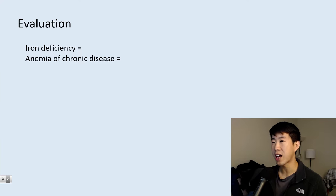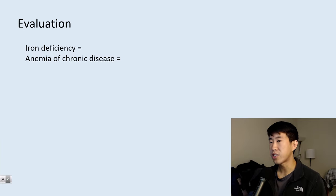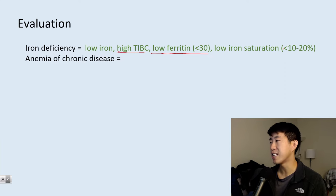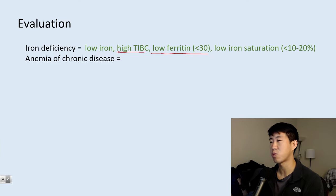I order these because I'm trying to clarify if the patient has iron deficiency or anemia of chronic disease. For iron deficiency, you're going to see a very typical pattern: low iron, high TIBC, low ferritin, and a low iron saturation. Less than 10% is basically definitely iron deficiency, and less than 20% is highly suggestive as well.